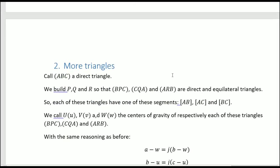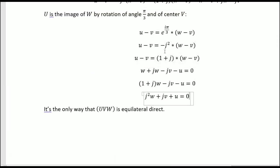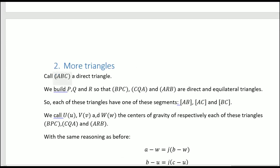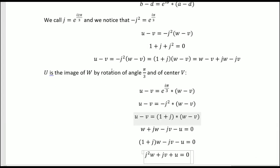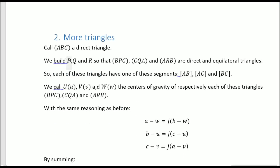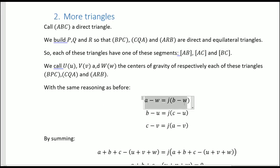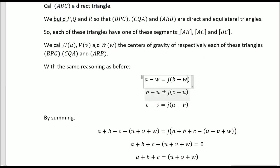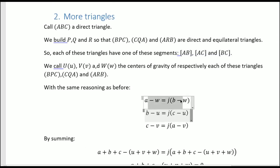Now I'm going to talk about triangles in general. I call ABC a direct triangle with no special property. As on this picture, I build P, Q, and R to be direct equilateral triangles on each of the segments. I call U, V, and W — depending on the complex variable — the centers of gravity of respectively each of the triangles BPC, CQA, and ARB. With the same reasoning as before, we get expressions from the rotation, and you get that pretty easily.